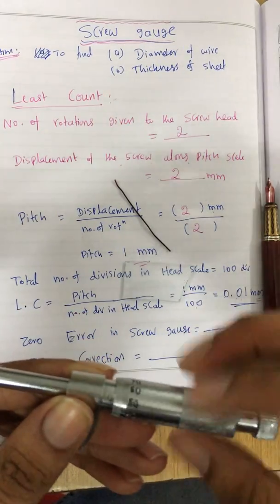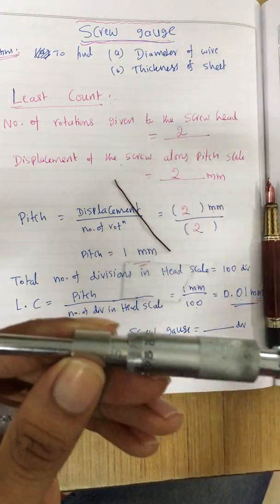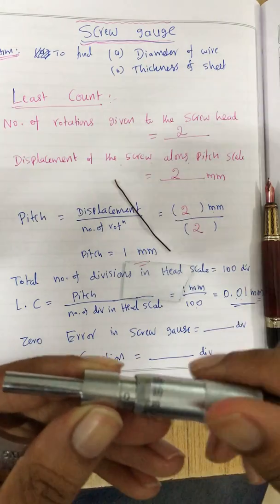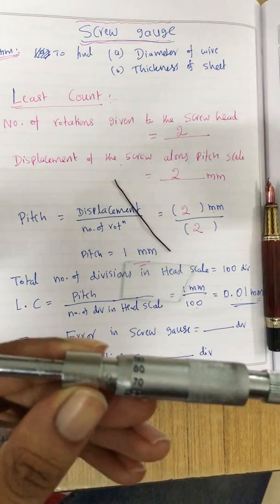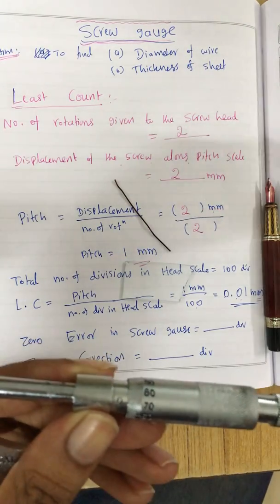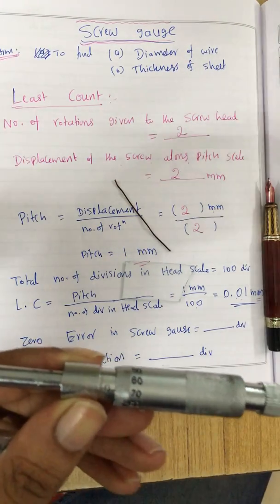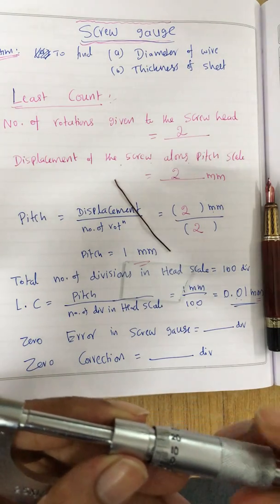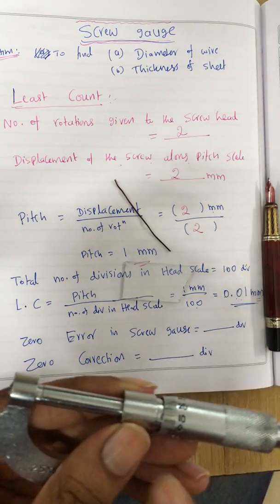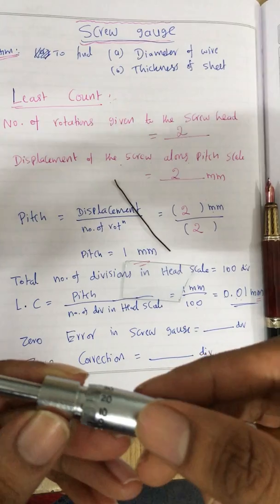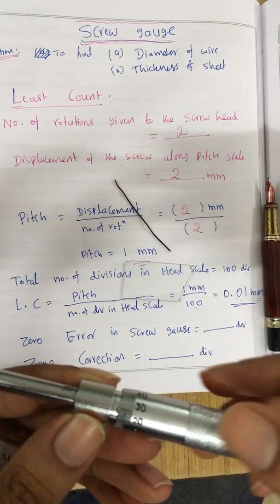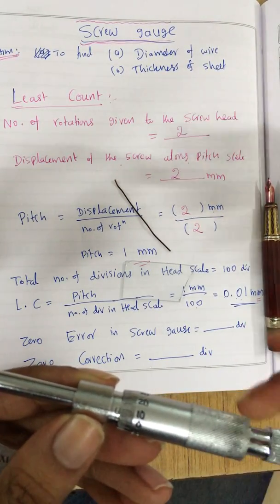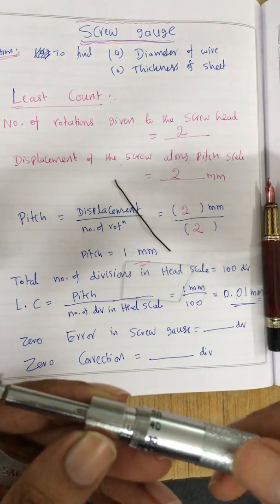The horizontal scale is called the P scale, and this one is called the head scale, or sometimes we call it the circular scale. Now when we tighten it, zero and zero are coincided. I will give two rotations — one rotation given, I'm back at zero; one more rotation to give.